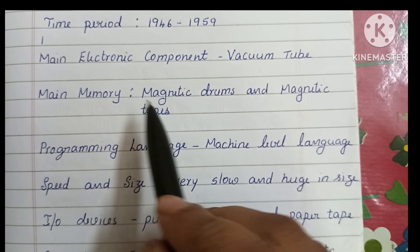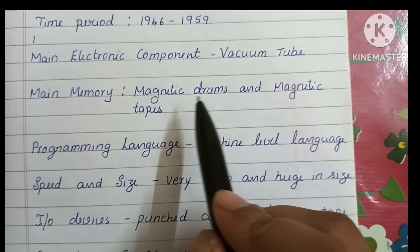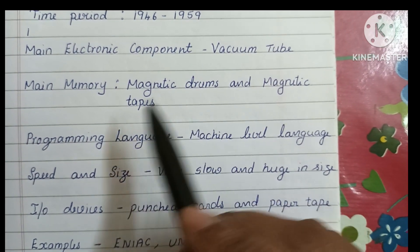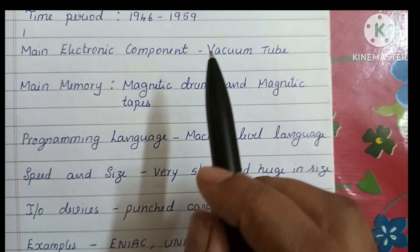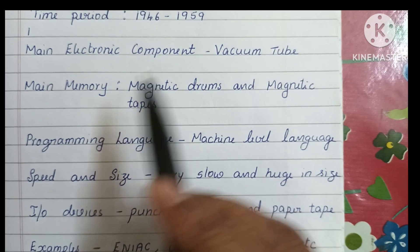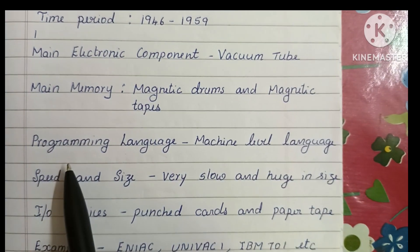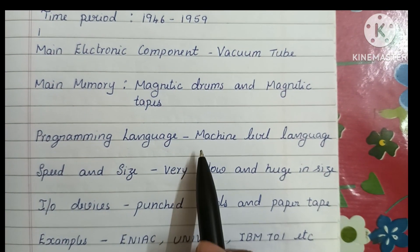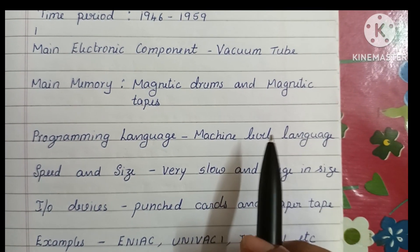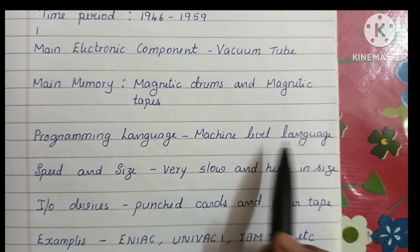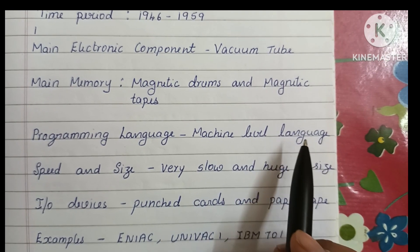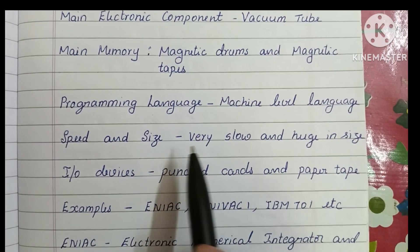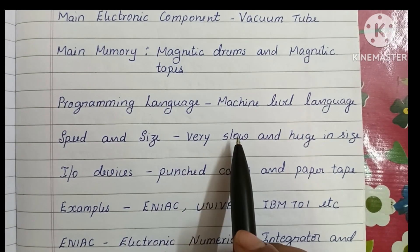Magnetic drums and magnetic tapes are used as main memory in first generation computers. The programming language used is machine level language. Regarding speed and size, the speed is very slow.